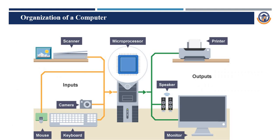This is the overall structure of the computer hardware system — what input signals we can send to the CPU, and what are the possible ways to produce output. For example, we can scan an image; the signals are input via camera, keyboard, or mouse. At the same time, the printer, speaker, and monitor produce the output information. In this way, input signals are sent to the CPU.